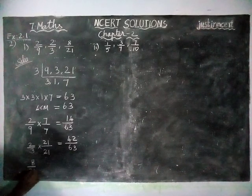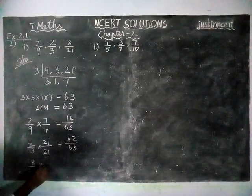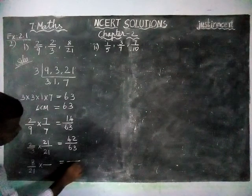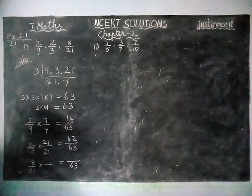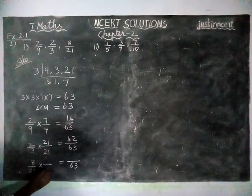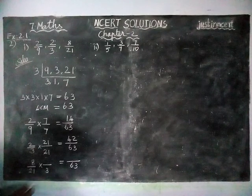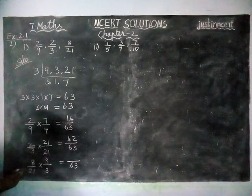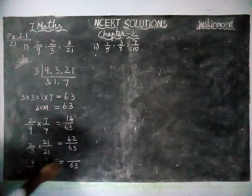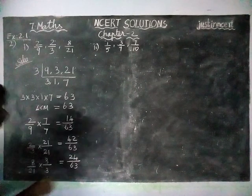And then 8 by 21 into dash by dash equals 63. When we are multiplying 21 by 3, we will get 63. The same thing is multiplied in the numerator also, 8 times 3 is 24.